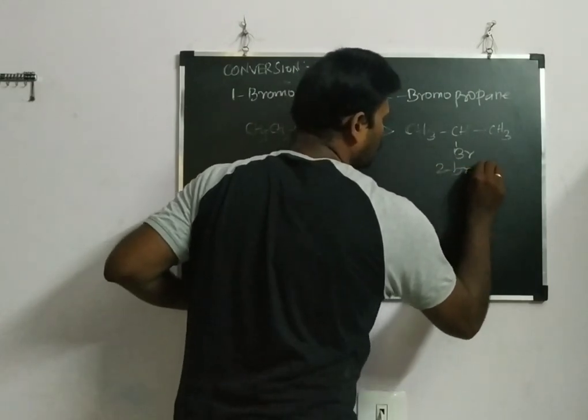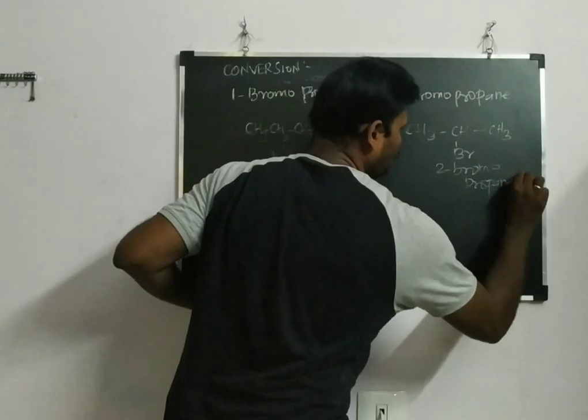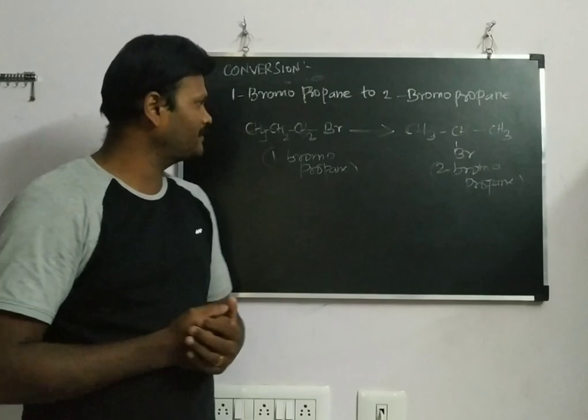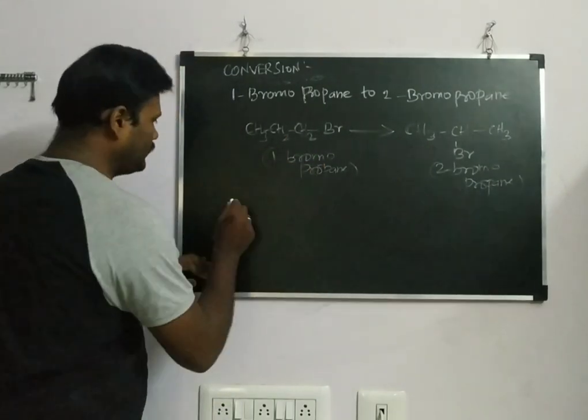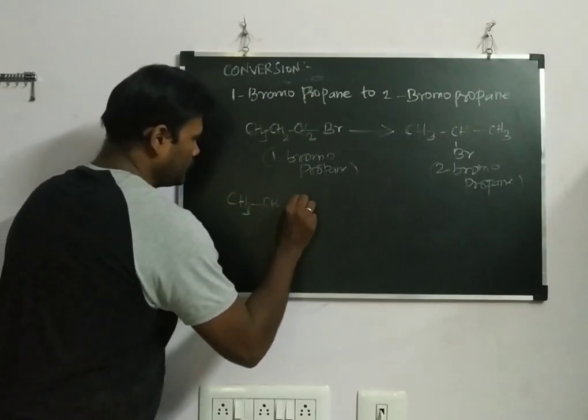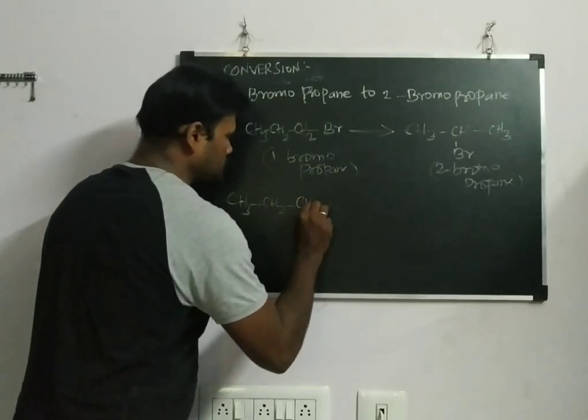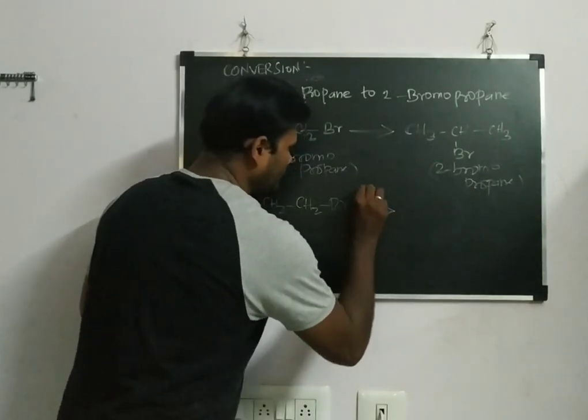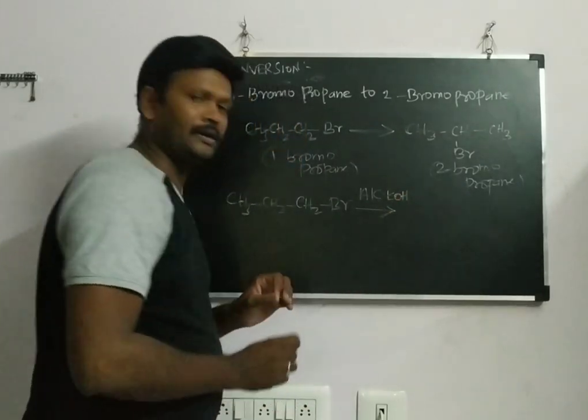Here it is 1-bromopropane and here it is 2-bromopropane. How can I do this conversion? This conversion is very easy. 1-bromopropane, now we can have it in mind: CH3-CH2-CH2-Br. Suppose if I am using alcoholic KOH, what we taught in our last class?